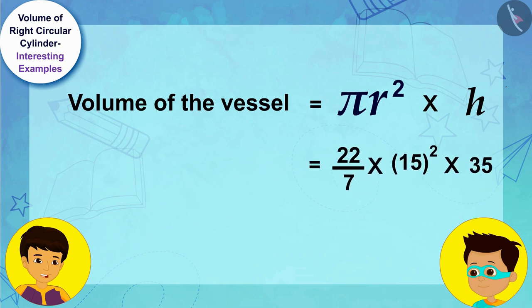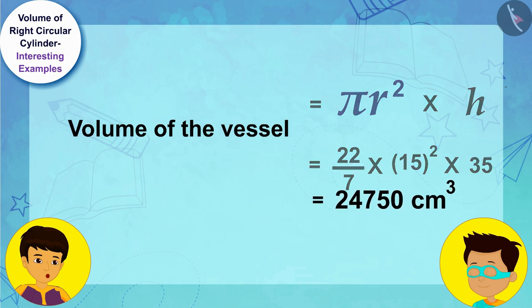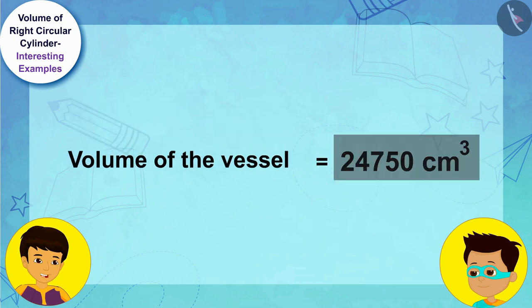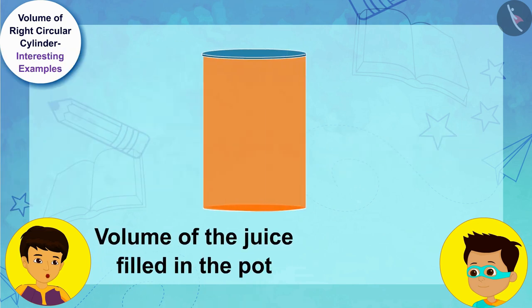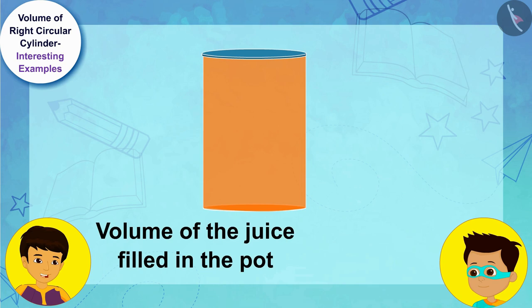With the radius of the base of the vessel 15 centimeters and height of the vessel 35 centimeters respectively. Look Thomas, the volume of the vessel is 24,750 cubic centimeters. This means that the volume of the juice filled in the pot is also 24,750 cubic centimeters.